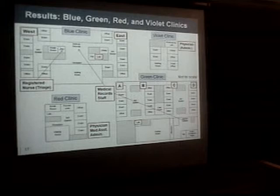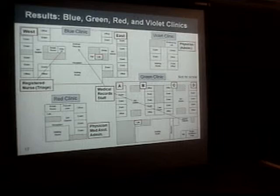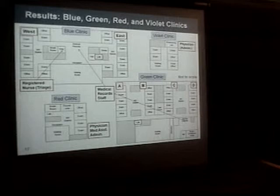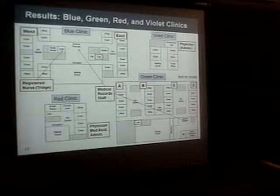Blue Clinic was organized into two sections — a west wing and an east wing — with somewhat different processes and team cultures between the wings. Green Clinic had four wings with more providers but more standardized processes. Red Clinic had only three people: a physician, a fairly new medical assistant, and an office administrator related to the physician. Violet Clinic didn't even have an MA — just one solo doc and a part-time bookkeeper who did scanning, EHR work, and bookkeeping a couple days a week.